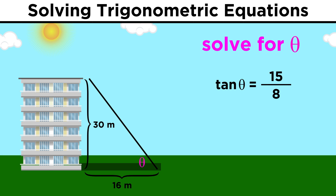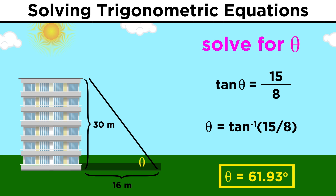To solve for theta, we just need to find the inverse tangent of fifteen over eight. We can plug that into our calculators, making sure we are in degree mode, and we should get just a hair under sixty-two degrees.